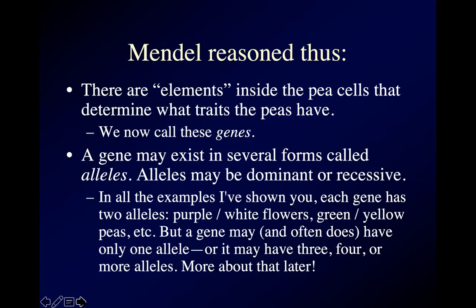Genes may have more than two alleles. The experiments that Mendel did were with genes that, as far as he ever found, only had two alleles. But when you do experiments like this with a wider range of traits and critters, you find there are genes that may have three alleles, four, five, twelve. The largest number I can think of is one human gene with 26 different alleles. So they don't always have to be only two, but we'll start with single genes with two alleles.